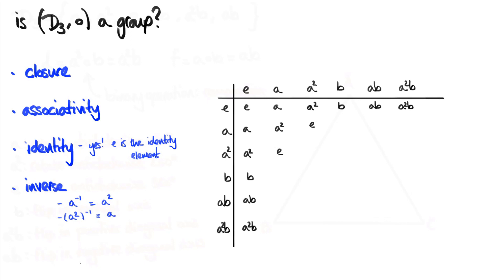I should also say that the inverse of the identity element is equal to the identity element itself — you can see why from the table. Now I've kept saying the order matters, and so far you might be thinking it clearly doesn't — the order has never made a difference. But now we're going to get to a composition where it really does.